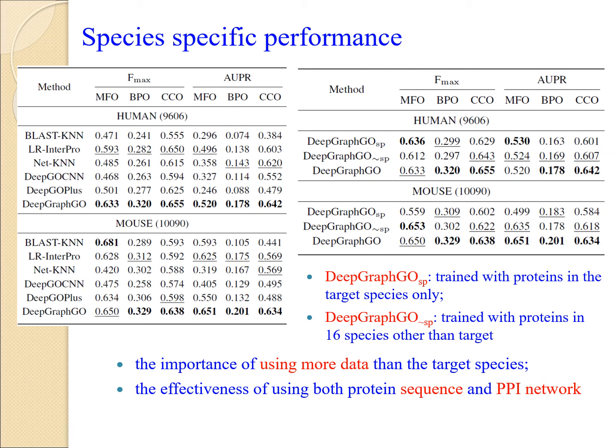Meanwhile, even without using the target species for training, DeepGraphGO still achieved relatively good performance. This result indicates that DeepGraphGO can make function predictions for proteins whose species are not in the training set.